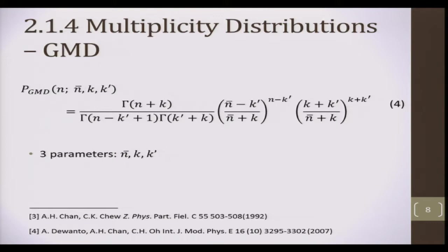The generalized multiplicity distribution is general in the sense that in the appropriate limits for k and k', we recover the Poisson distribution, the Furry distribution used by Hwa, and the negative binomial distribution. In this sense, the GMD can explain what the other distributions can, and a little bit more.